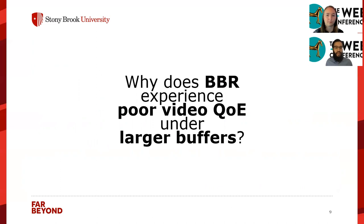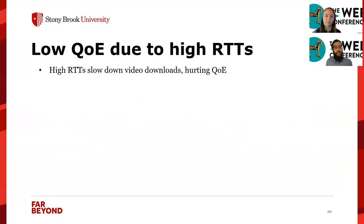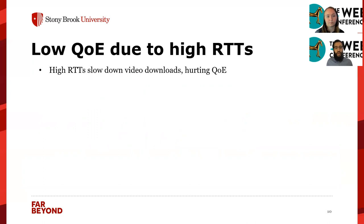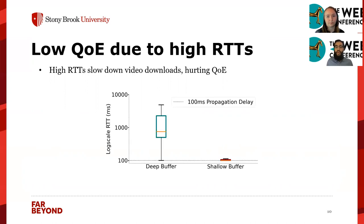We dig in and observe one thing: this low QoE under deep buffers with BBR is due to high RTTs. These high RTTs slow down video downloads, which effectively lowers throughput and also causes more stalling because videos take longer to download — both hurting QoE.